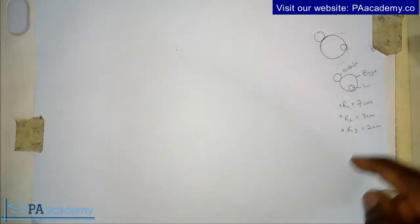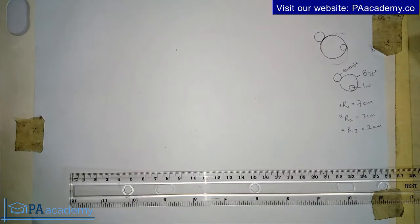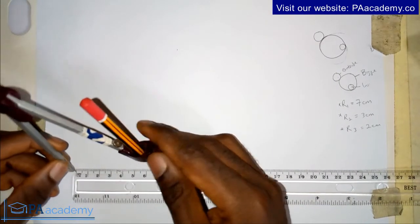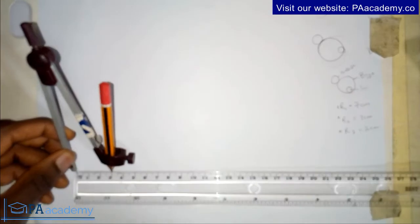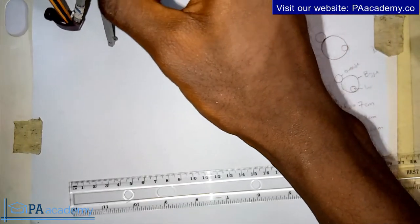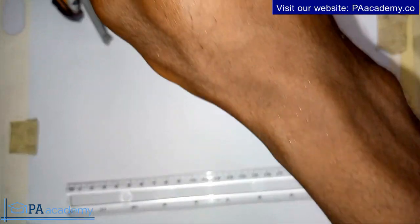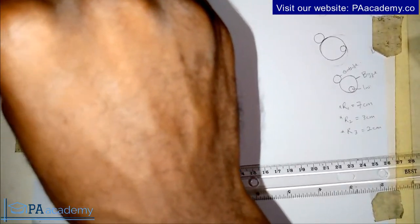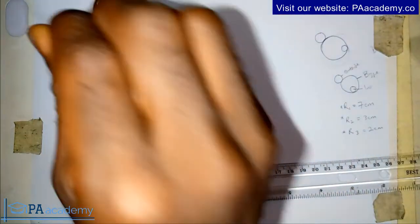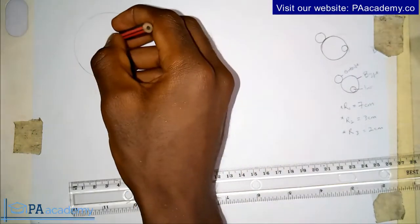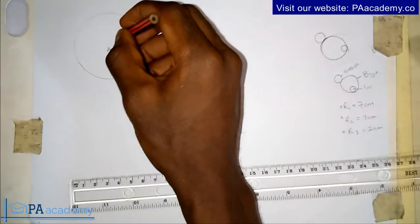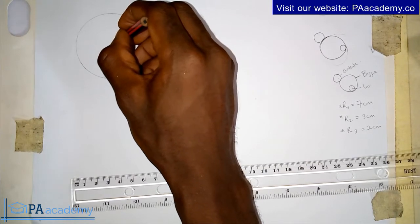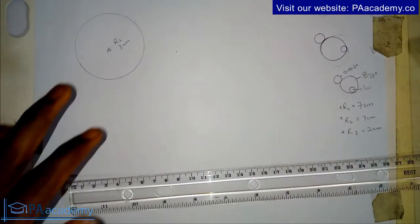We are going to draw R2 and R3 first. I bring my compass and measure three centimeters. I already have my three centimeters, so I'll draw the first circle. That's the first circle. Let me note the center of that circle as point A. This is R2 with a radius of three centimeters.